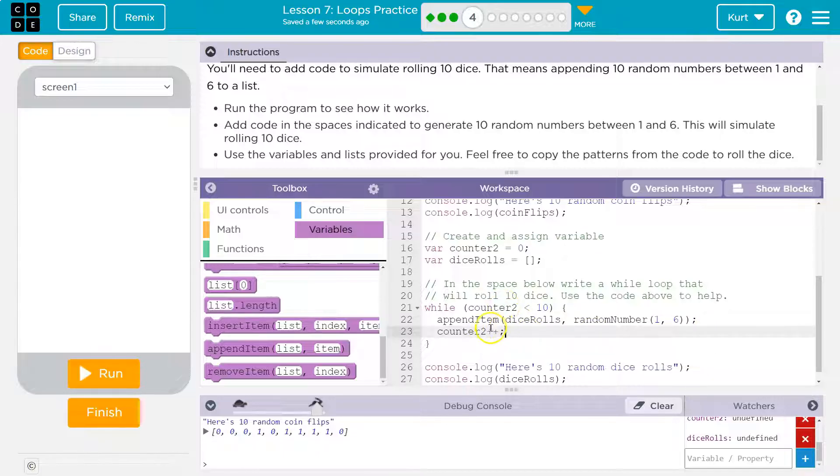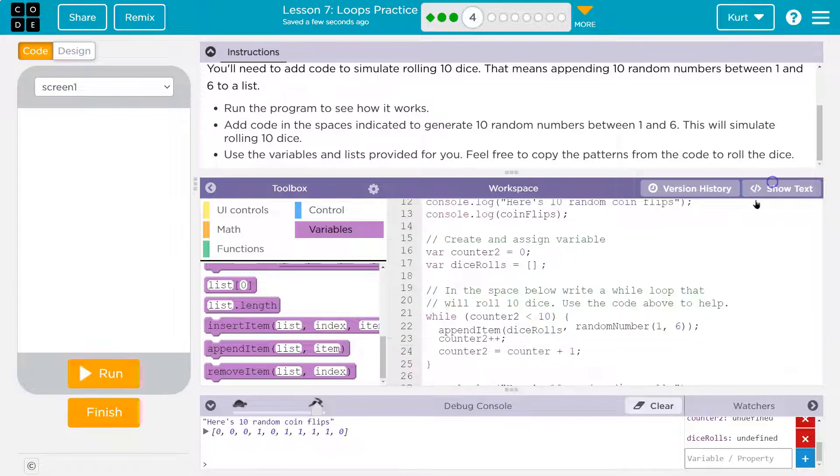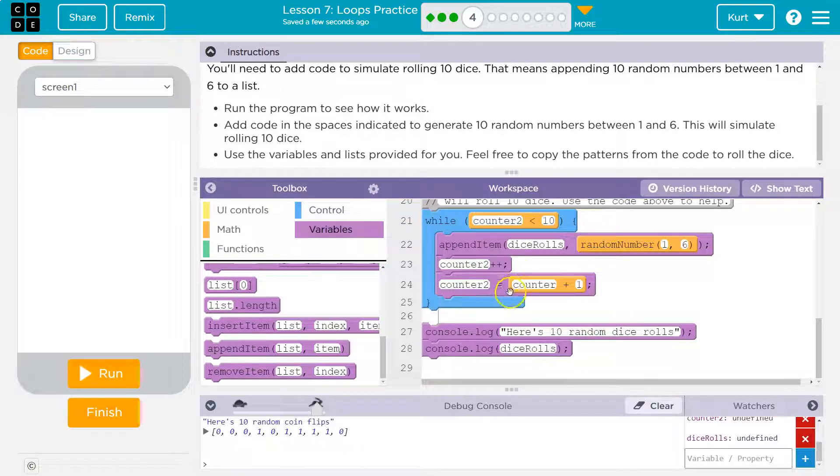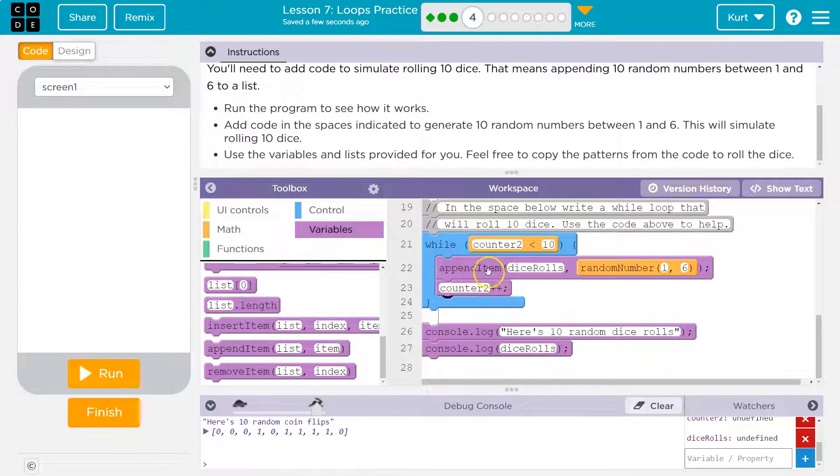Counter two plus plus because our variable's name is counter two. And again, this is identical. Saying counter two plus plus is identical to this. I just want to reiterate that. This is the exact same thing. Counter plus plus is counter two equals counter two plus one. That's what we're doing. We're just saying grab counter, add one to it. Keep going.